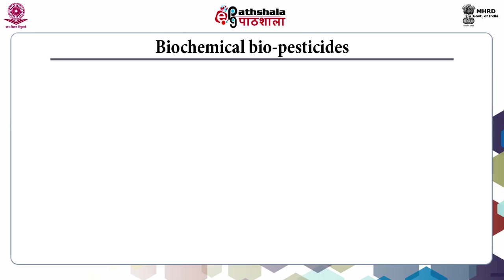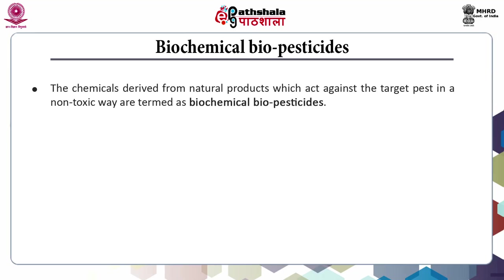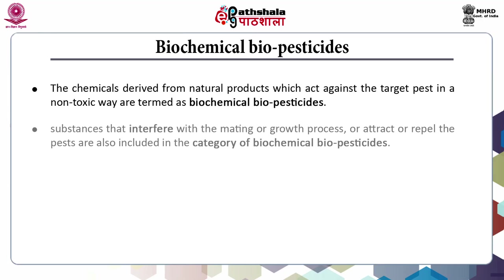Coming to the next set of biopesticides: biochemical biopesticides. Chemicals derived from natural products which act against target pests in a non-toxic way are termed biochemical biopesticides. Substances that interfere with the mating or growth process, or attract or repel pests, are also included in the category of biochemical biopesticides.